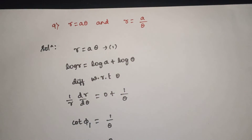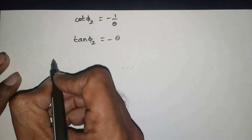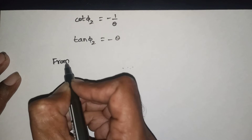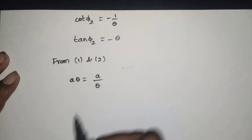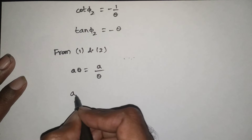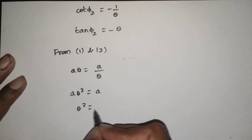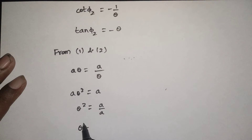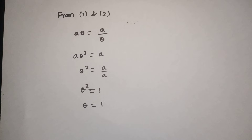From the two curves, a·θ equals a/θ, so a·θ² equals a, and a cancels. Therefore θ² equals 1, giving θ equals 1.